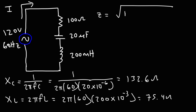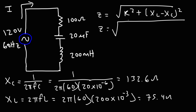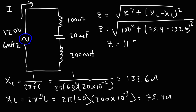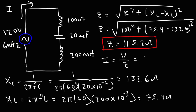Now, to calculate the impedance we use the formula: square root of R squared plus (XL minus XC) squared. That's the square root of 100 squared plus (75.4 minus 132.6) squared, which gives 115.2 ohms. The current is the RMS voltage divided by the impedance: 120 volts divided by 115.2 ohms, which equals 1.04 amps.